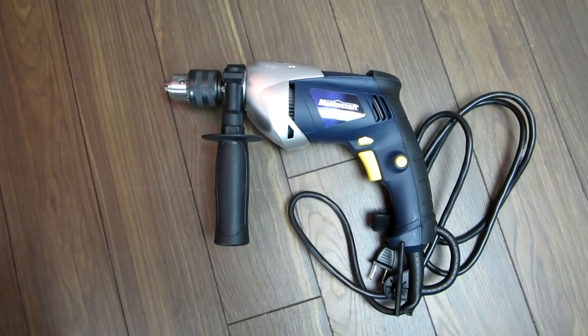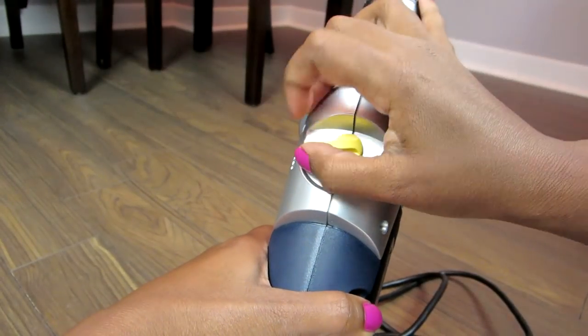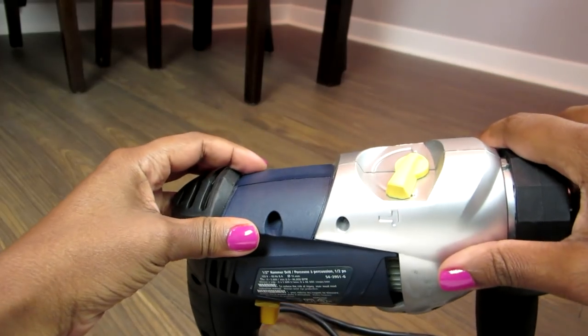It has an additional removable handle so you can hold on to it firmly. To go from hammer mode to normal mode, just flip the switch. The side with the hammer is hammer mode.